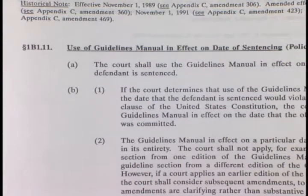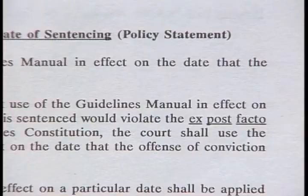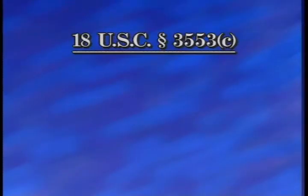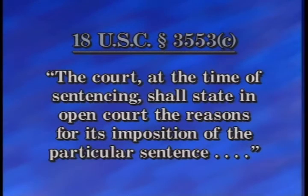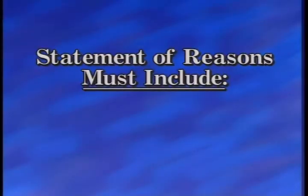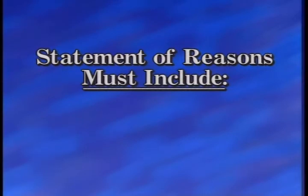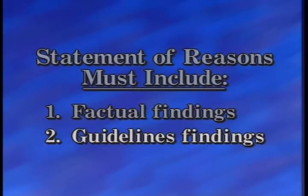The Sentencing Commission has promulgated Policy Statement Section 1B1.11, which details the Commission's view of how the guidelines should be applied if the ex post facto clause requires that the court not use the guidelines in effect at the date of sentencing. The Sentencing Reform Act requires that in all cases the court, at the time of sentencing, shall state in open court the reasons for its imposition of the particular sentence. Moreover, if the sentence is within the guideline range and that range exceeds 24 months, the court must state its reasons for imposing a sentence at a particular point within that range. And if the court departs from the guidelines, it must state its reasons for departing. The case law and legislative history of the Act make clear that the statement of reasons must include both factual findings and guidelines findings in every case.